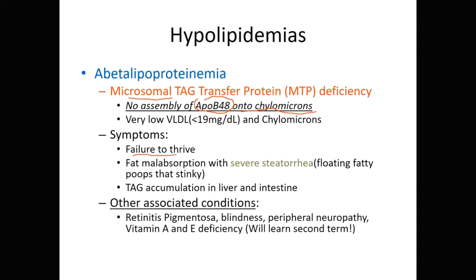Symptoms include failure to thrive in infancy. Without chylomicrons entering the blood, fats cannot be absorbed from the gut. The fat continues through the bowel into the large intestine and is excreted — this is known as steatorrhea. It represents severe fat malabsorption in children. Their stool will be floating in older children or very foul and fatty in the diapers of infants.